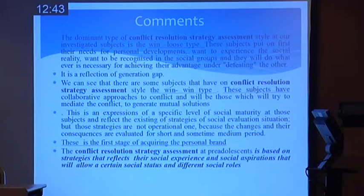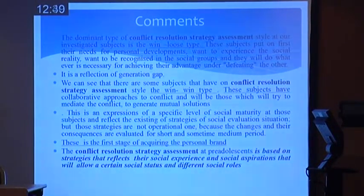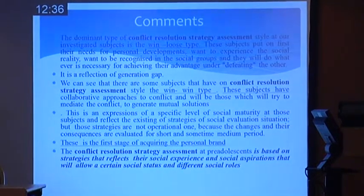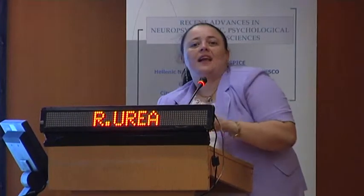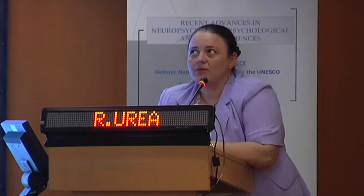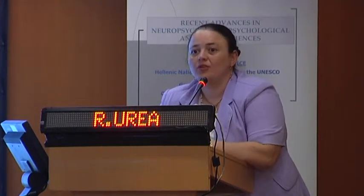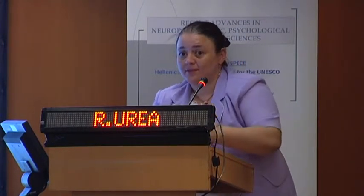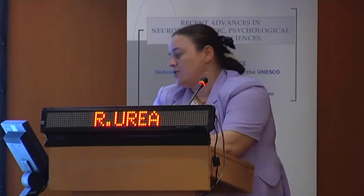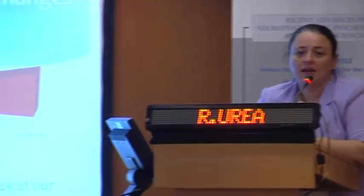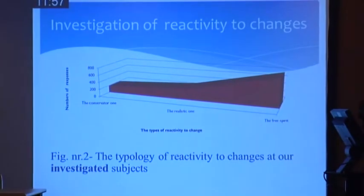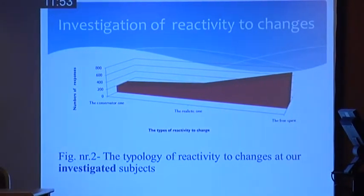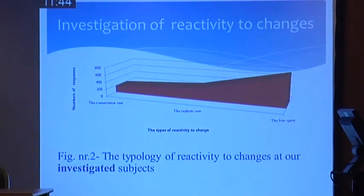We also found that the win-lose style and the win-win style form a kind of personal brand. In a group of pre-adolescents in Romania, you say: 'He's the bully, he does everything to win' or 'He's the peacemaker, the quiet one who knows everyone and reacts when necessary.' This is a form of personal brand, and we can assume that personal branding starts from pre-adolescence. Regarding reactivity to changes, the free spirit type dominates — meaning: I'm involved in activity to test myself and be somebody in the world, without regard for consequences.